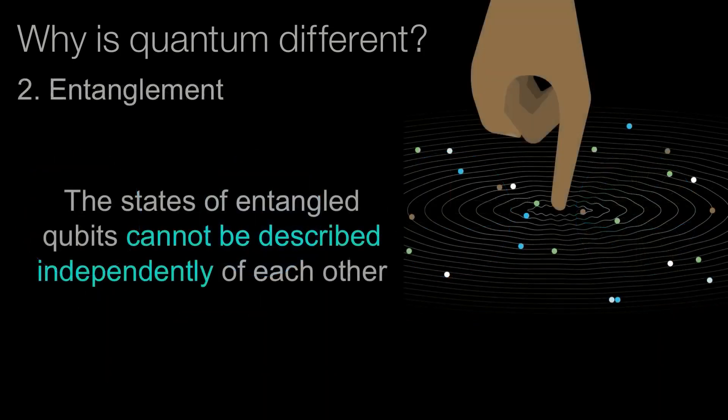The second thing is entanglement. This idea of entanglement is: I've got two qubits and I'm entangling them together, so measuring the first qubit can tell me something about what will happen when I measure the second qubit. Entanglement is the second property that gives quantum information a really unique difference.